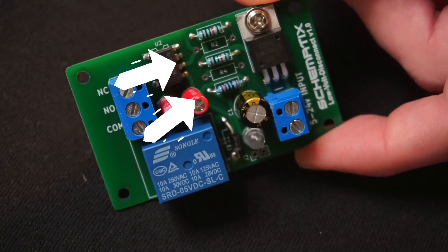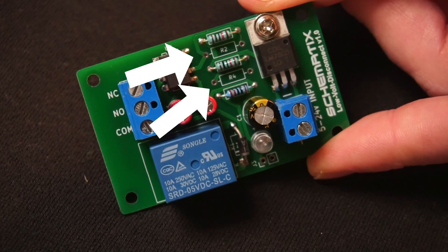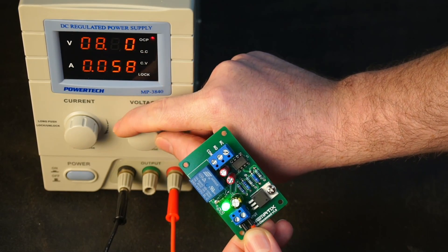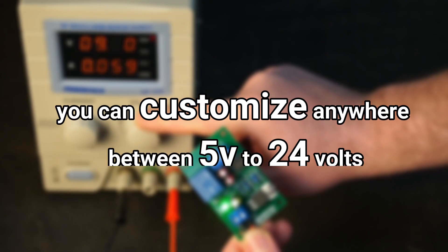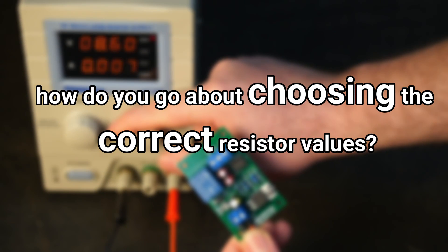Now at this point you'll notice I'm missing resistors R2 and R4, and that's because these resistors determine the disconnect and reconnect voltages which you can customize anywhere between 5 to 24 volts. But how do you go about choosing the correct resistor value?